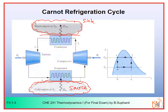Starting from point number four in the diagram, the refrigerant enters the evaporator as a two-phase vapor-liquid mixture. In the evaporator, heat removal from the cold region is used to vaporize some refrigerant liquid into more vapor at constant temperature Tc. In this step, the pressure and temperature of the refrigerant are constant. At the evaporator outlet, which is point 1, the refrigerant is then compressed adiabatically to point 2, where it is a saturated vapor. During this step, the temperature increases from Tc to Th, while the pressure also increases.